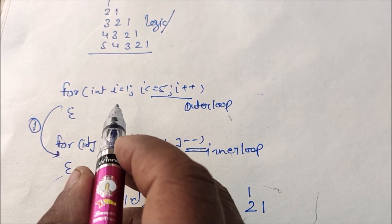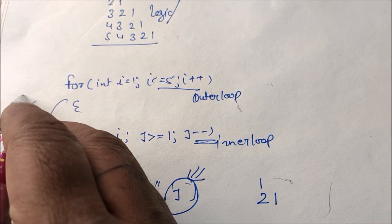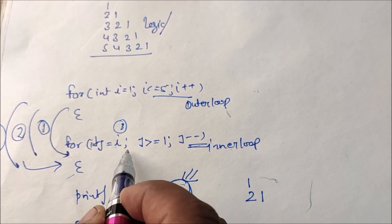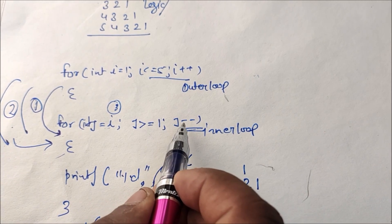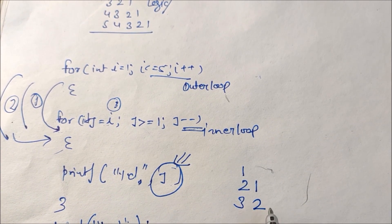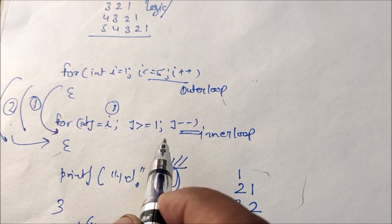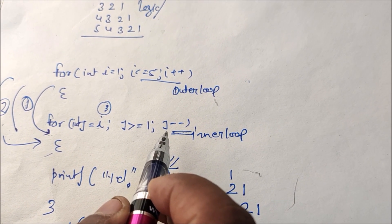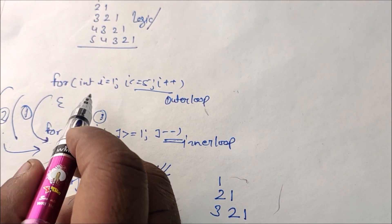Now i = 3. We enter the inner loop, j = 3. Condition 3 >= 1 is true, print 3. Then j-- gives j = 2, condition true, print 2. Then j-- gives j = 1, condition 1 >= 1 is true, print 1. Then j-- gives j = 0, condition false, exit inner loop and go to outer loop.